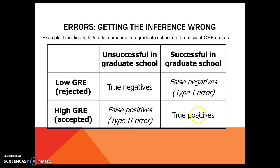If I'm successful in grad school and I had a high GRE, then that was also a correct decision — you should have let me in, I had a high GRE and I was successful. But it's also possible that I have a high GRE score and I'm unsuccessful in grad school — that would be a type 2 error. That's still unfortunate, but I at least got to try to be in grad school. Type 2 error is also not a good thing, but we tend to at least not make huge decisions and change things based on type 2 errors.